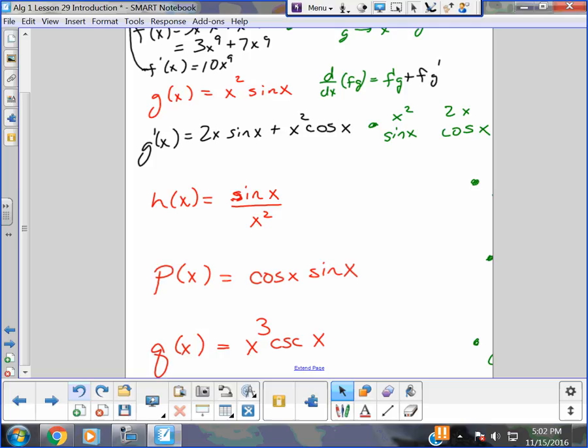If you want to see f and g and f prime, g prime, they're right here. f is x squared. f prime is 2x. g is sine x. g prime is cosine x. It is that quick.